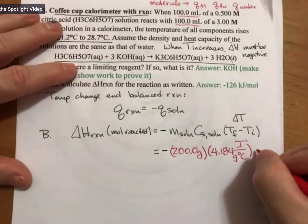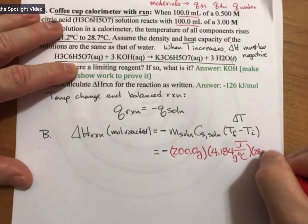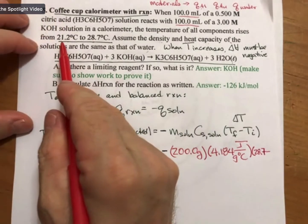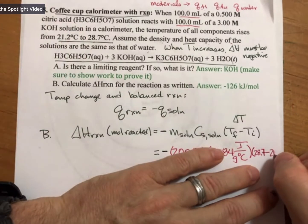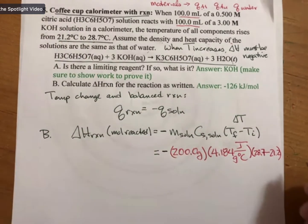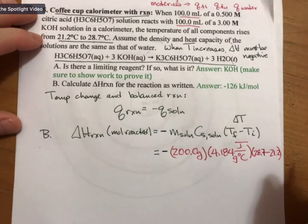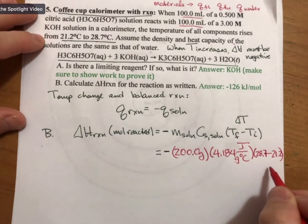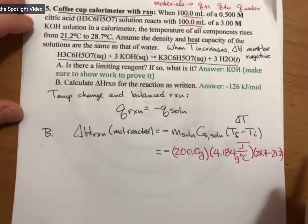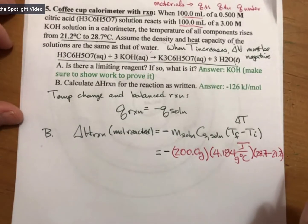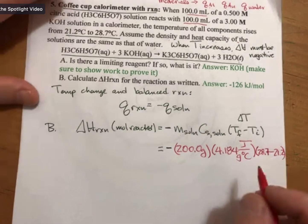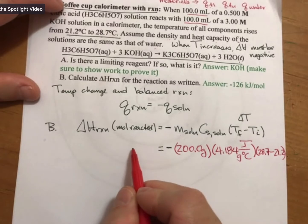And my temperature change, my final temperature is 28.7 and my initial temperature is 21.2. So now I've got my entire right-hand portion of this equation. Any questions about that? If not, now let's tackle the mole part.